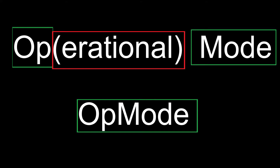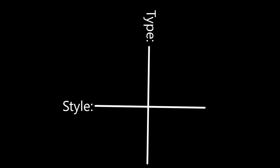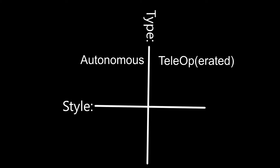Op-mode stands for operational mode. It is code that runs when you start your program from your driver's station phone. There are two distinct types of op-modes and two different styles of programming them. The two types of op-modes are autonomous and tele-op, sometimes called tele-operated. They mimic the two stages present in an FTC game.